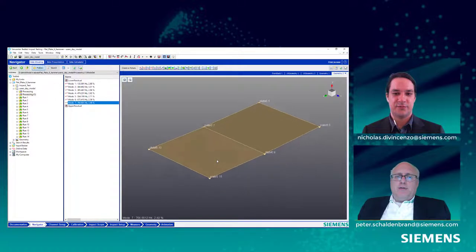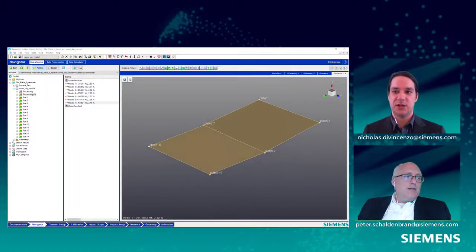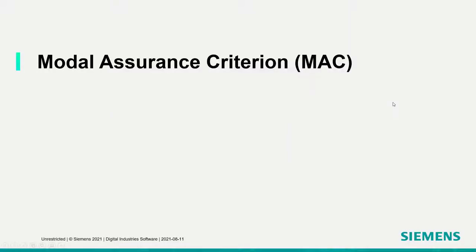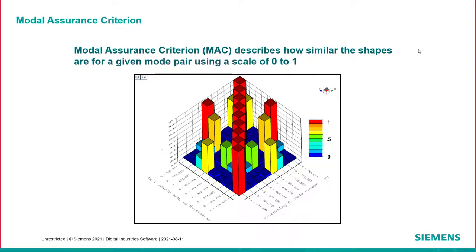The modal assurance criterion, or MAC for short, is a tool that we can use to gauge the quality of the mode shapes that we've calculated — it's one of the quality indicators. The general idea is it's a way of describing how similar two mode shapes are. For a given mode pair, we're comparing two modes and we rank them in similarity using a scale of 0 to 1, or 0% to 100%. One or 100% is very similar and 0 is not similar at all.